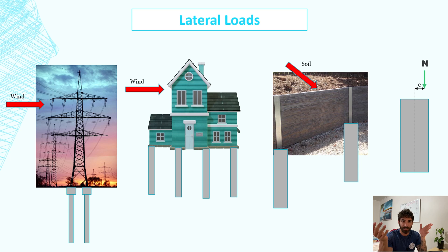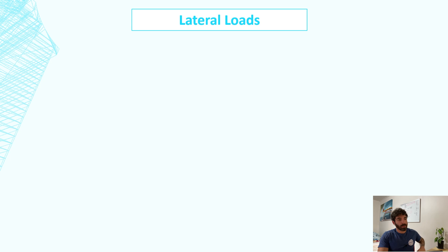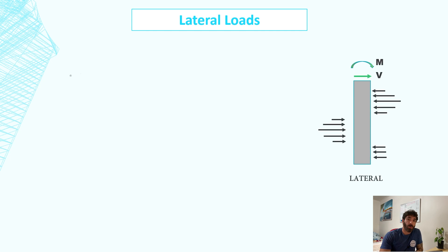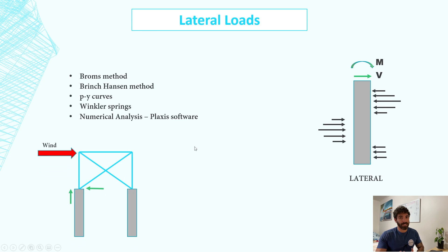You have several methods to work out the lateral capacity of a pile. The ones I believe are most used are Broms method, Brinch Hansen method, p-y curves, Winkler springs, and numerical analysis like the Plaxis software. Just a couple of comments to finalize this subject. If you have a bored pier connected to a cross-bracing system, the pier will have to be designed to take lateral loads and uplift.